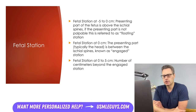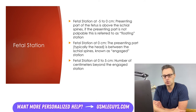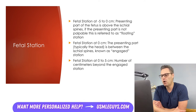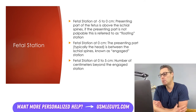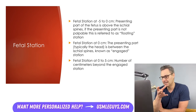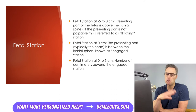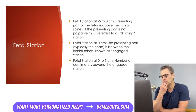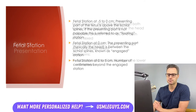Fetal station is used to assess fetal descent during vaginal delivery. We use a scale from negative five to positive five centimeters, with zero meaning the presenting part of the fetus is at the midway point between the ischial spines — referred to as engaged. Negative values indicate how many centimeters above the ischial spine the presenting part is; positive values indicate how many centimeters below. If the presenting part is not palpable, this is referred to as a floating station.